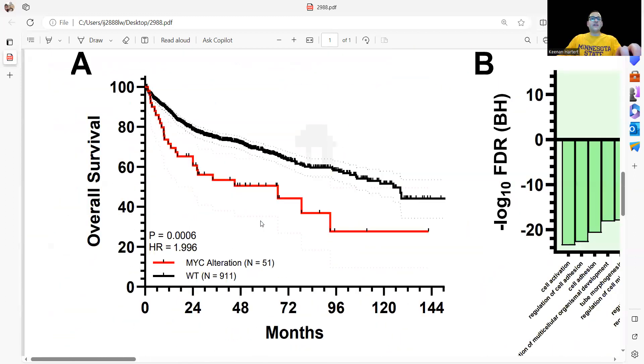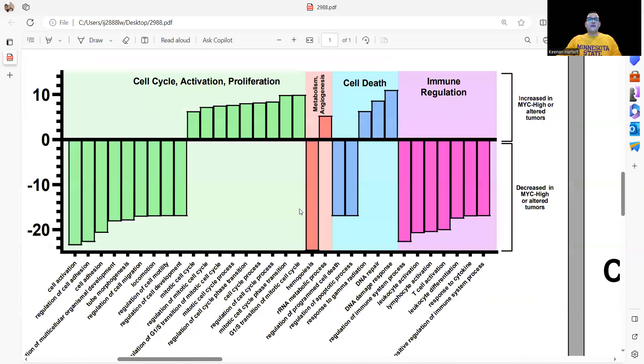Looking at the Reddy et al. analysis, we see that when you have a MYC alteration or MYC high, it doesn't look good. Looking at data we've seen in the past, when you take a look at what MYC can do, you're gaining quite a bit of cell cycle capability, but you're also losing a ton of immune regulation and recognition capabilities.